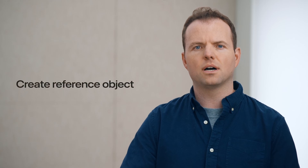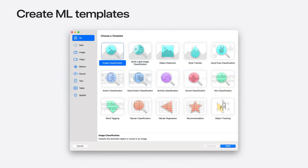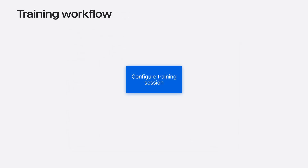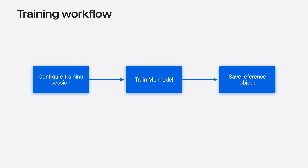Now let's dive into creating a reference object. Object tracking requires individual machine learning training for each target object, and we've integrated this into the CreateML app, which runs all training locally on your Mac. When you launch CreateML, you can choose from a variety of templates. This year, we're introducing a category called Spatial with our new object tracking template. The training workflow has three steps: configure the training session with your USDZ assets, train your ML model locally on your Mac, and save the reference object to build your spatial experience on Apple Vision Pro.